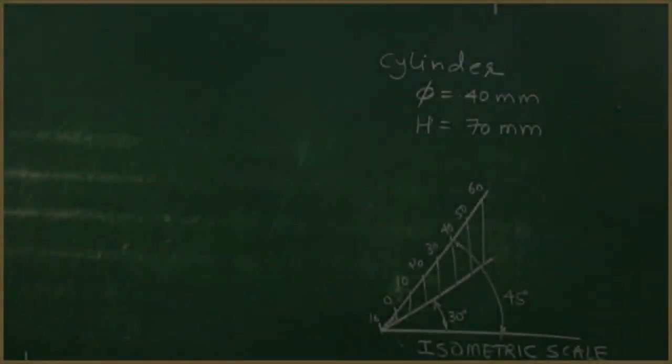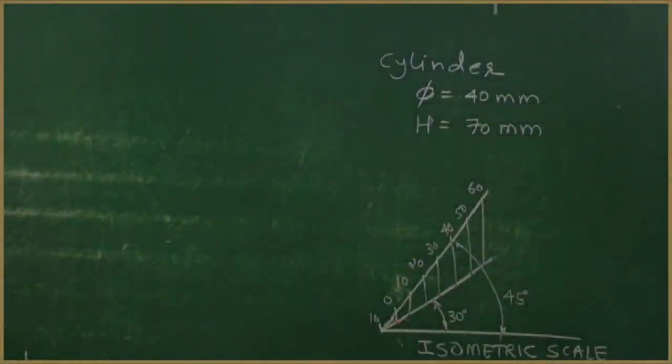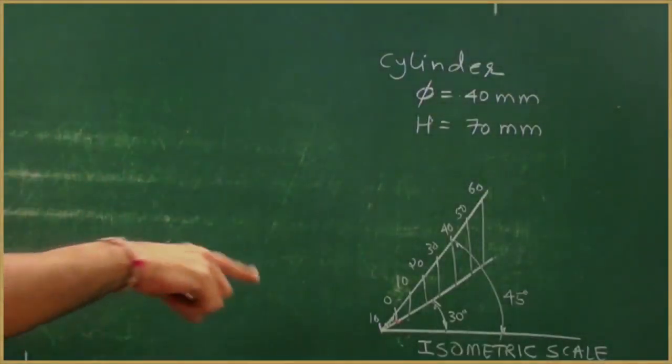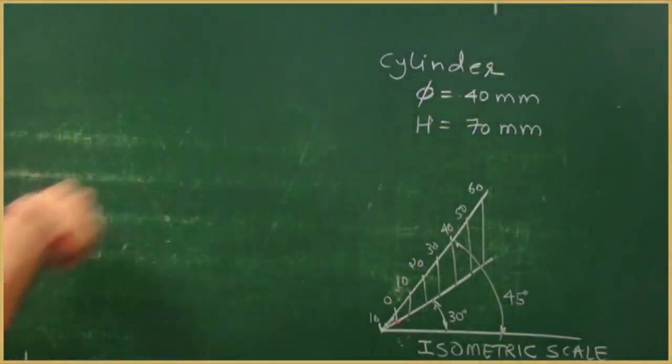lying on horizontal plane keeping its axis parallel to HP and VP both. So first we need to draw isometric scale, so that we will draw till 60, 0 to 60 and 0 to 10 to mark 70